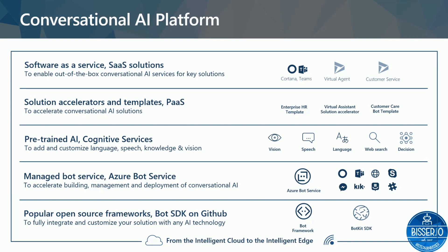On top of that, you get to use cognitive services to integrate intelligence into your bot, because the bot itself is not that intelligent on its own. There are more than 20 or almost 30 cognitive services out there which you can use across various categories like vision, language, understanding, speech, and so on. Microsoft is also now starting to push out templates you can use as a starting point for various use cases, like an HR template or a customer care template.